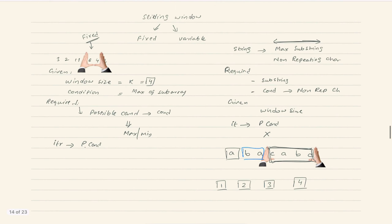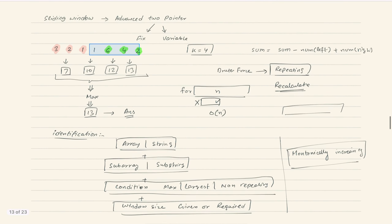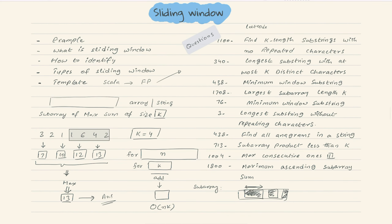So to summarize what we discussed: an example for sliding window, what sliding window is, how to identify it, the types of sliding window (fixed and variable), and the template. In the next videos we will solve actual questions by applying this coding template. Thanks!